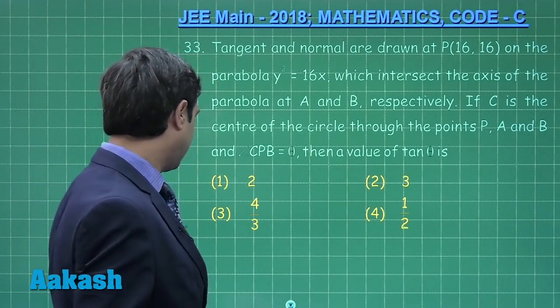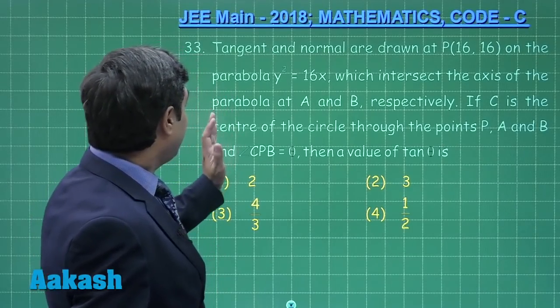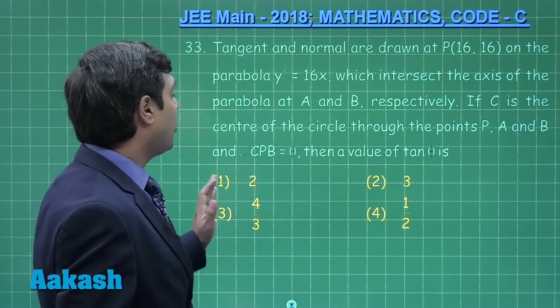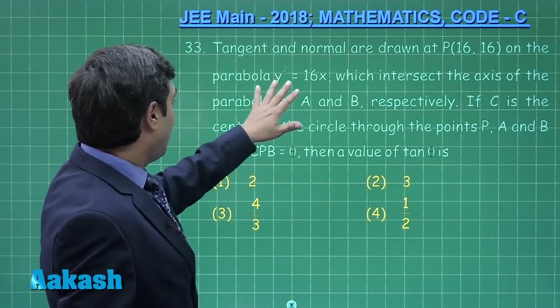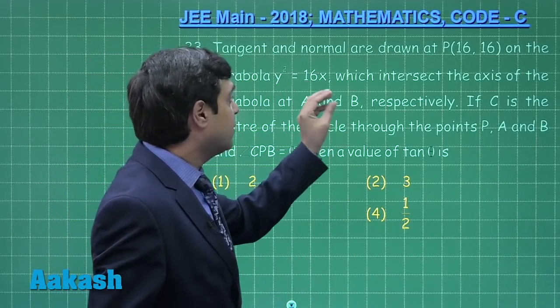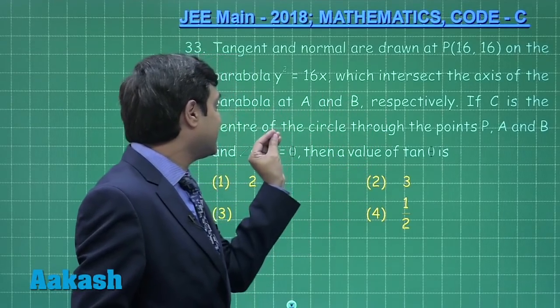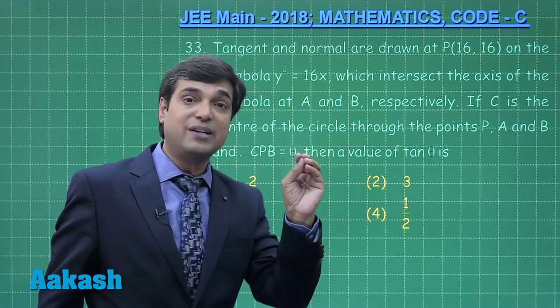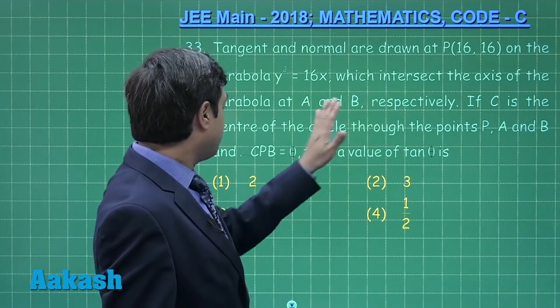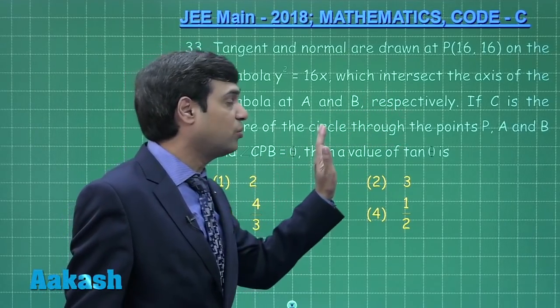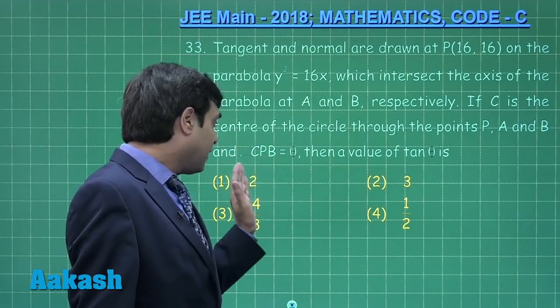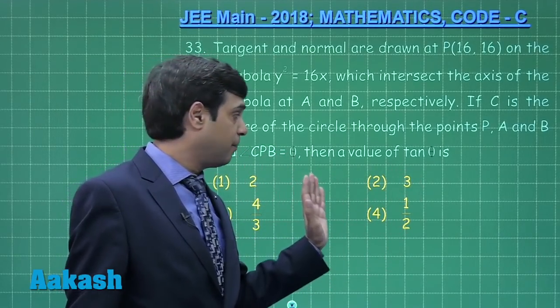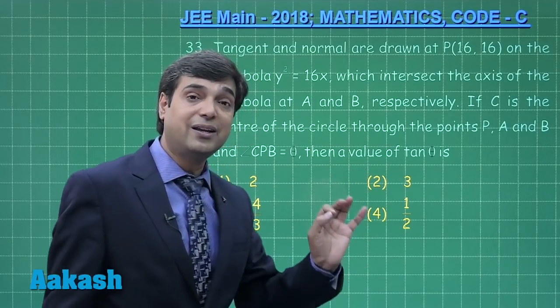Let us move on to question number 33. Tangent and normal are drawn at point P(16,16) of the parabola y² = 16x which intersect the axis of parabola at two points A and B respectively. If C is the center of the circle through the points P, A and B, and angle CPB = θ, then the value of tan θ is.